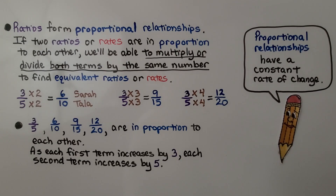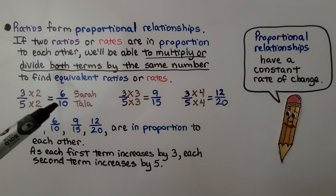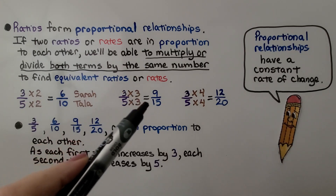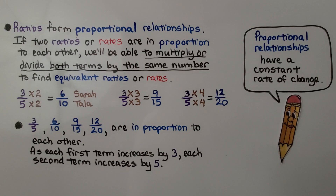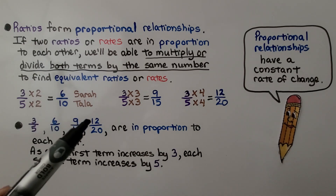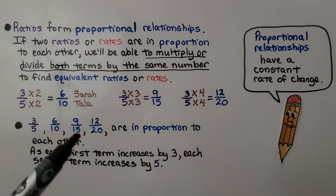Ratios form proportional relationships. If two ratios or rates are in proportion to each other, we'll be able to multiply or divide both terms by the same number to find equivalent ratios or rates. Sarah made three bracelets and Tala made five. If we multiply both terms by two, we get six for Sarah and ten for Tala. Multiplying by three gives nine for Sarah and fifteen for Tala. Multiplying by four gives twelve-twentieths. Three-fifths, six-tenths, nine-fifteenths, and twelve-twentieths are in proportion to each other. Notice that as the first term increases by three, the second term increases by five.